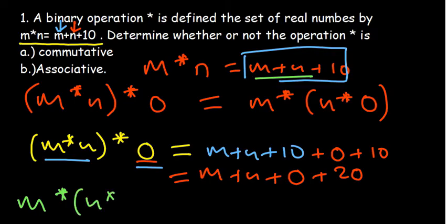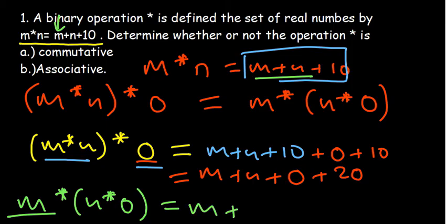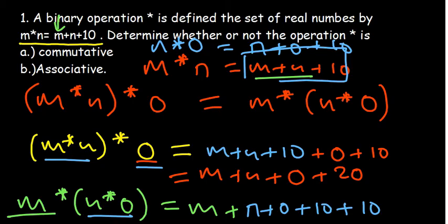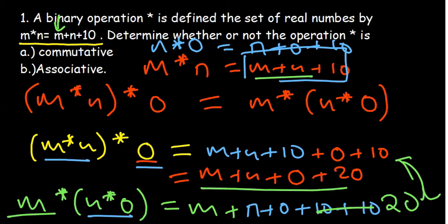For the right-hand side, m★(n★o), where there is m we put m as it is, and where there is n we substitute n★o. Now n★o equals n plus o plus 10. So the right-hand side becomes m plus (n plus o plus 10) plus 10, which gives m plus n plus o plus 20. Since both sides are equal, this proves the binary operation is associative.